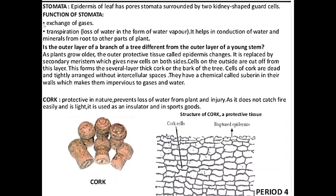Hello students, welcome to my channel Simply Biology. Today we are going to start with the topic of how cork or bark is formed, and about complex permanent tissue. You can see that cork is present in a champagne bottle — that is a cork. Cork comes from a tree stem, and this cork means bark. This bark can be removed, like in eucalyptus.